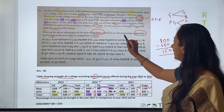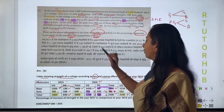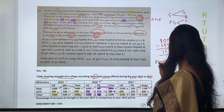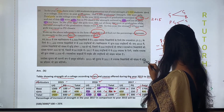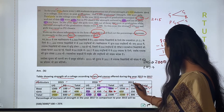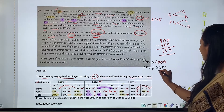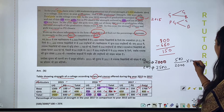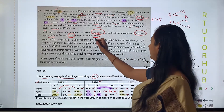Now we find the percentage increase in strength in 2017 in comparison to 2015. In 2015, the total strength was 2000. In 2017, the total strength became 2500. The increment is 500. Using the formula: increment divided by base year value multiplied by 100 — that is 500 divided by 2000 multiplied by 100 — the answer is 25 percent. So there was a 25% increase in strength.